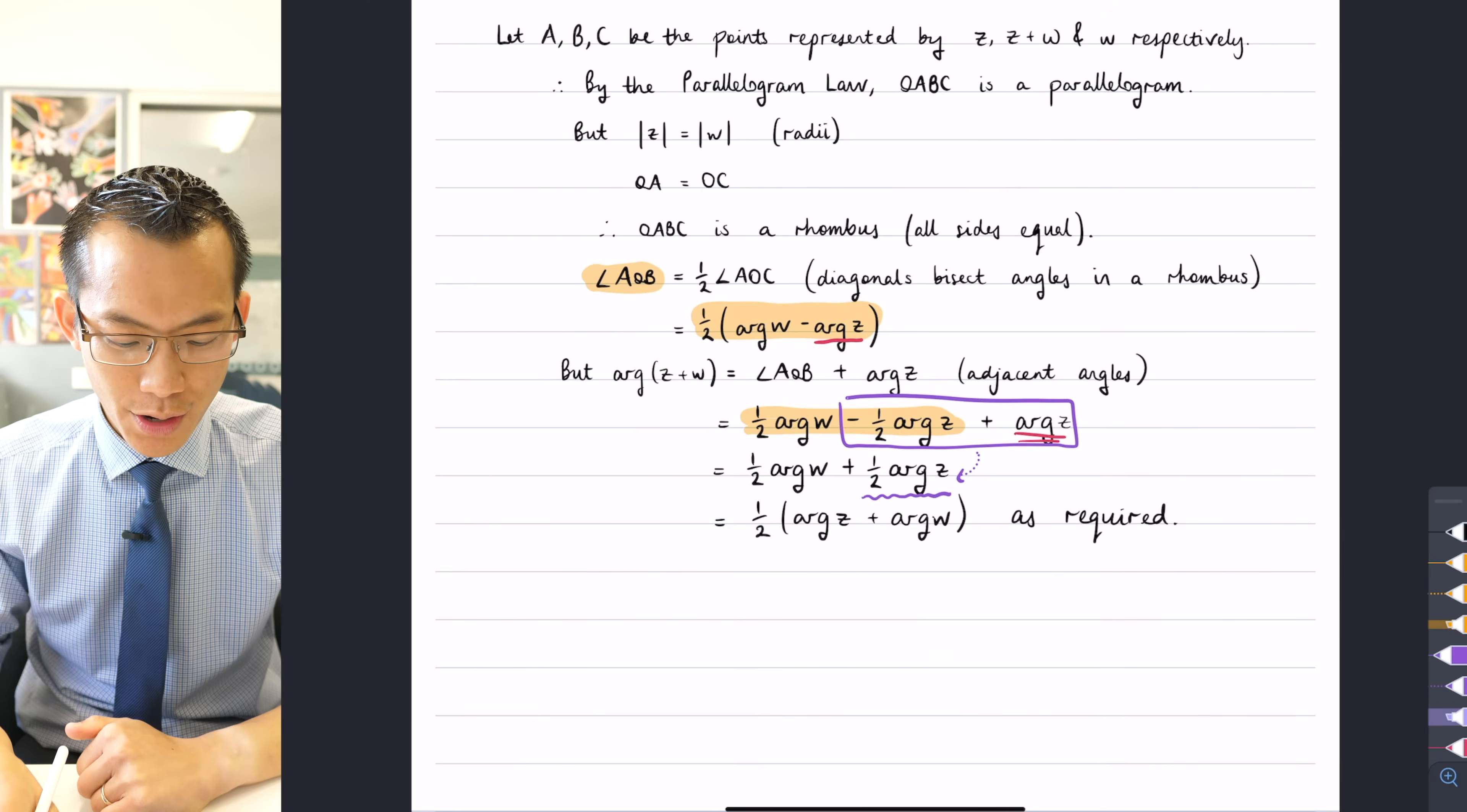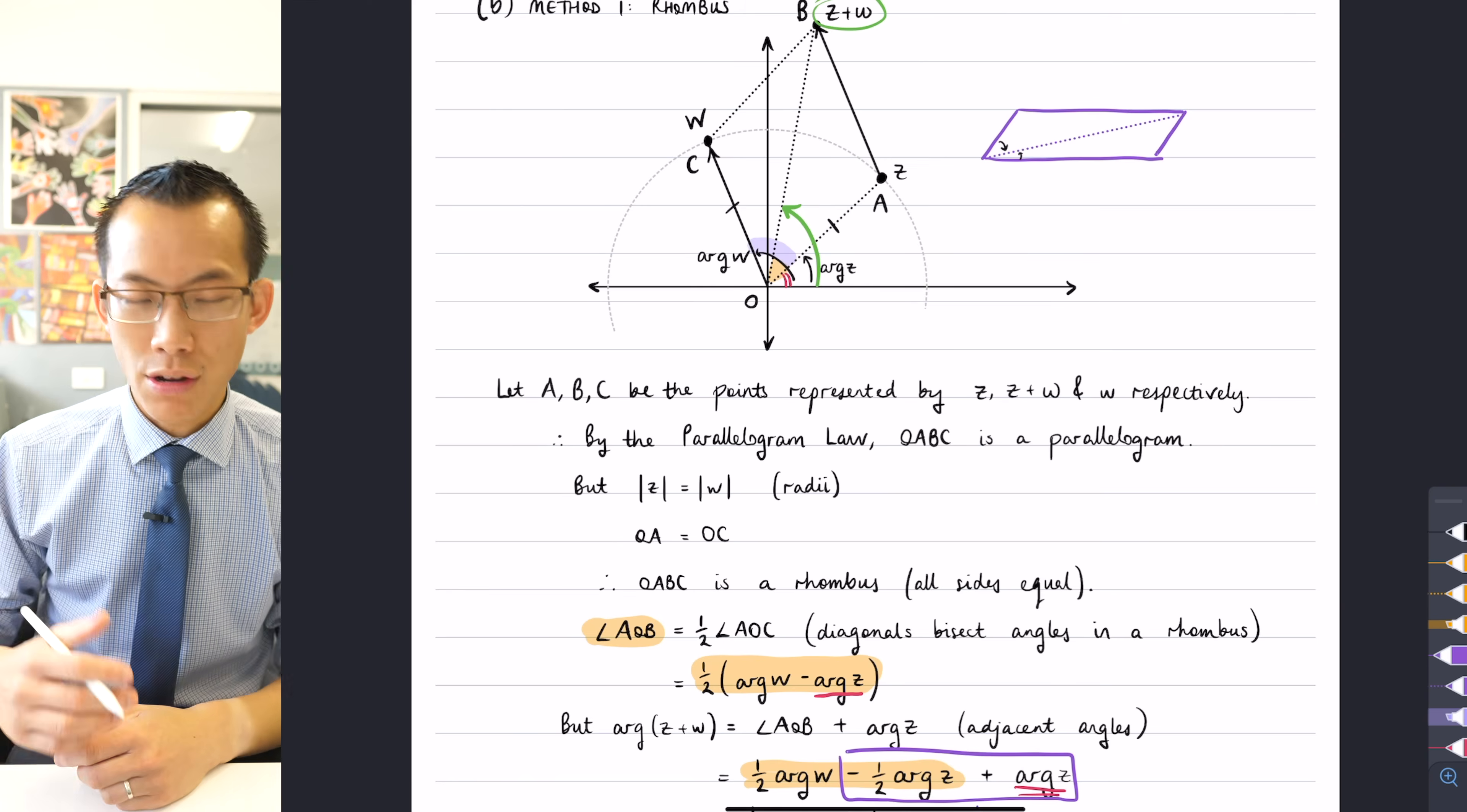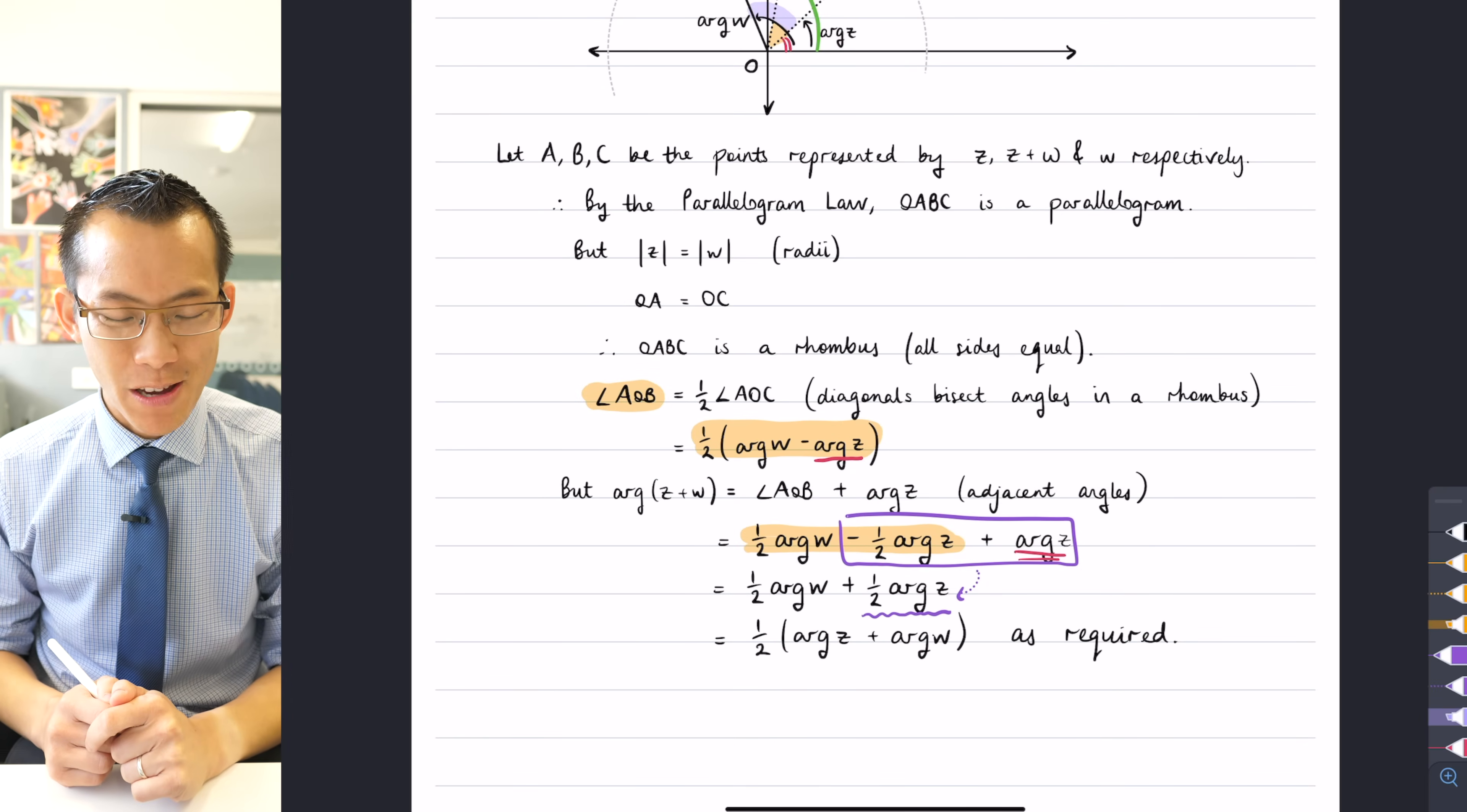So you can see there was some clear steps there. I needed to work out what arg of z plus w was, but being able to do that is clearly related to arg z and arg w independently. And I use the appropriate geometric properties in order to prove that.